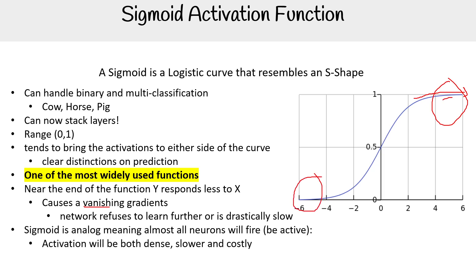Sigmoid is analog, meaning almost all neurons will fire and be active. Activation will be both dense, slow, and costly.